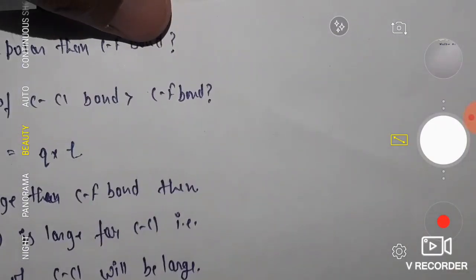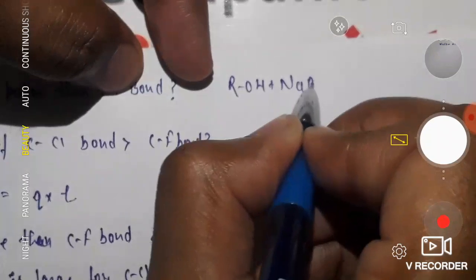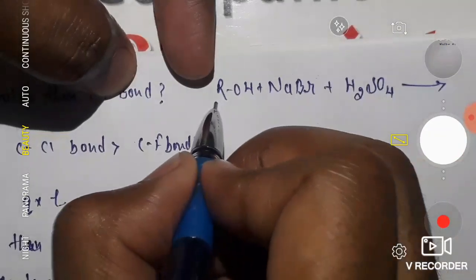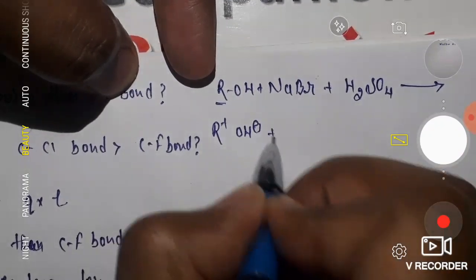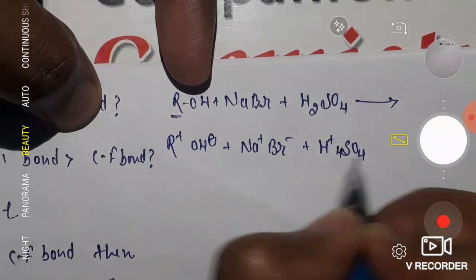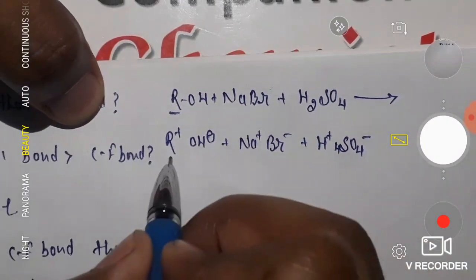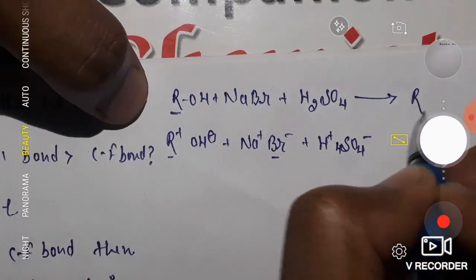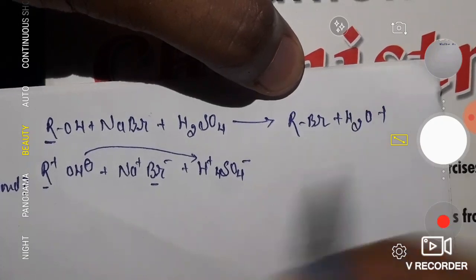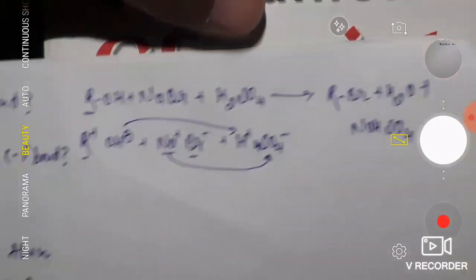Moving further within alcohol reactions: if you have ROH and add NaBr plus H₂SO₄, the R⁺ combines with Br⁻ to give RBr, while OH⁻ combines with H⁺ to give water. Na⁺ and HSO₄⁻ remain, giving NaHSO₄ as a side product. These are straightforward reactions — no need to memorize by cramming.